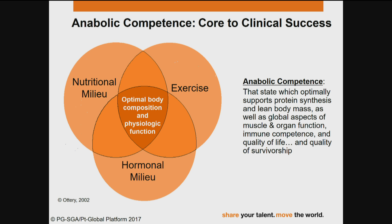One of the important overriding components of anything that we're doing in terms of having an impact on nutritional status, body composition, et cetera, is really an interdisciplinary and multi-modality approach. This includes addressing the nutritional milieu of the patient, exercise or activity, looking at the hormonal milieu of the patients — whether they're on corticosteroids, whether they're hypogonadal, whether they're hypothyroid, et cetera. Anabolic competence is defined as that state which optimally supports protein synthesis and lean body mass, as well as global aspects of muscle and organ function, immune competence, and quality of life — and importantly, as we're increasingly successful in our interventions, quality of survivorship.